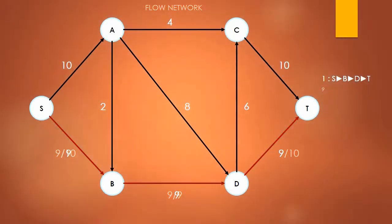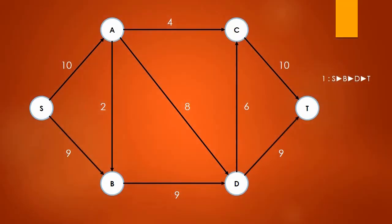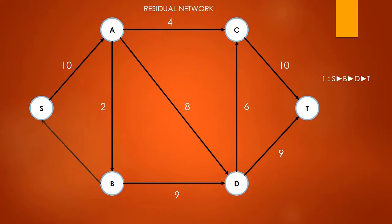The residual network has the same vertices as the flow network. However, its edges show the surplus capacity — the additional flow we can send before the edge reaches maximum capacity. For each edge in the path, we push back the value of the maximum flow, which is the same as the minimum weighted edge in the path. So for the edge S to B, we can push back 9.